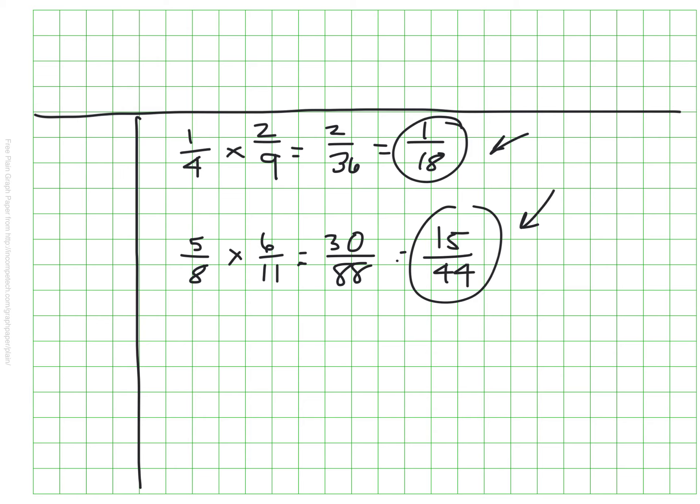All right. So before we end, we'll just write down our rule, or as we can call it now, our algorithm, one more time as a series of steps. Step one is to multiply your numerators. Step two is to multiply the denominators. And then step three, if it's possible, simplify your final fraction.